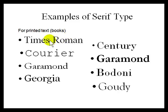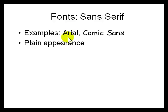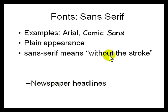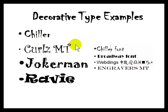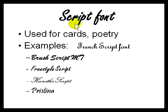For printed books you use Times Roman, Century, Garamond, Bodoni, Courier, Georgia. Sans-serif fonts are plain — like Arial and Comic Sans — and newspaper headlines are in sans-serif because they don't have a stroke at the end. 'Sans' means 'no.' They are used for labels and illustrations when you're reading just a few words. Decorative fonts include Jokerman and Chiller. Symbolic fonts are like Wingdings and Greek symbol characters like omega. Script fonts are used for poetry and greeting cards.